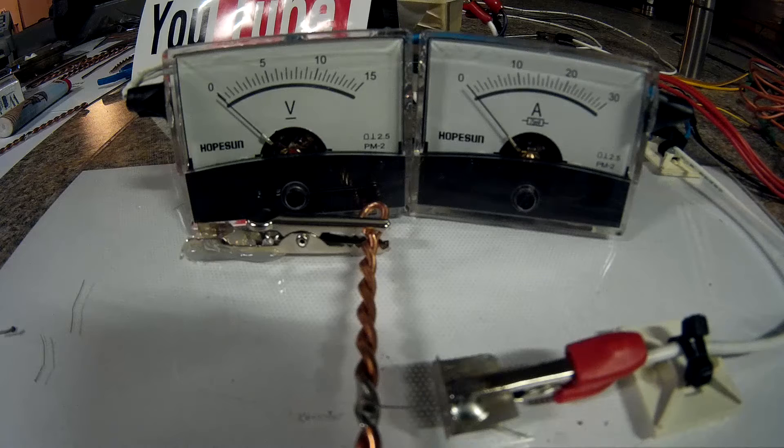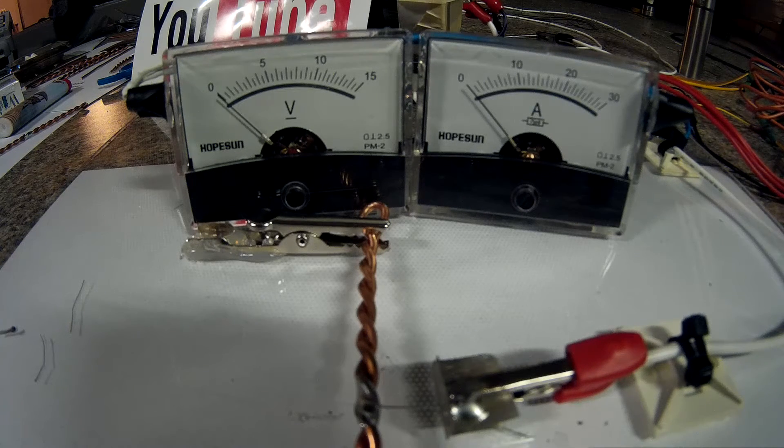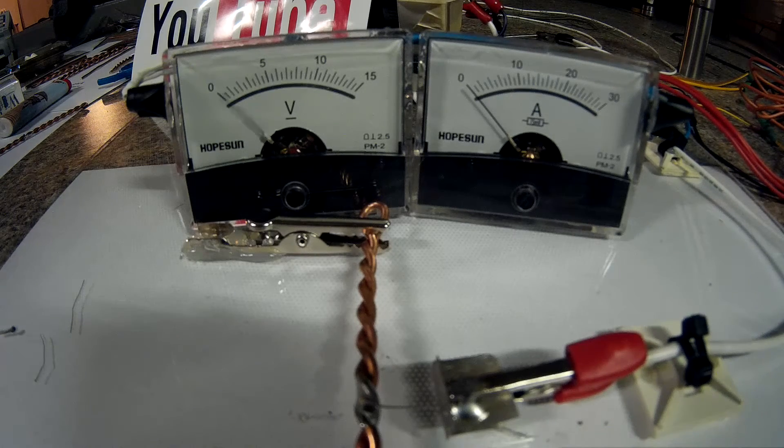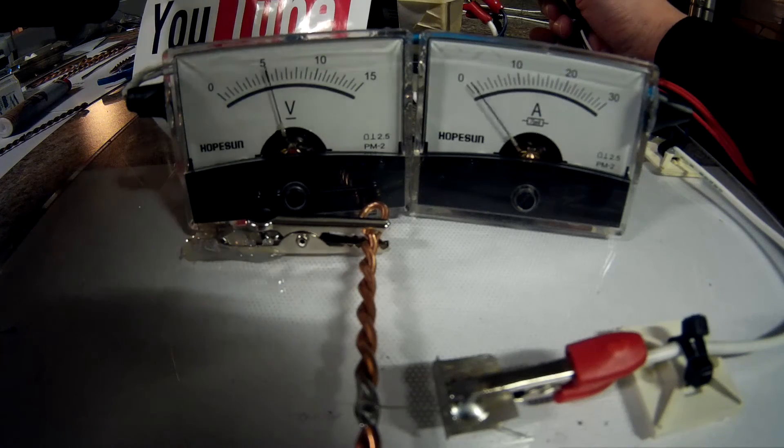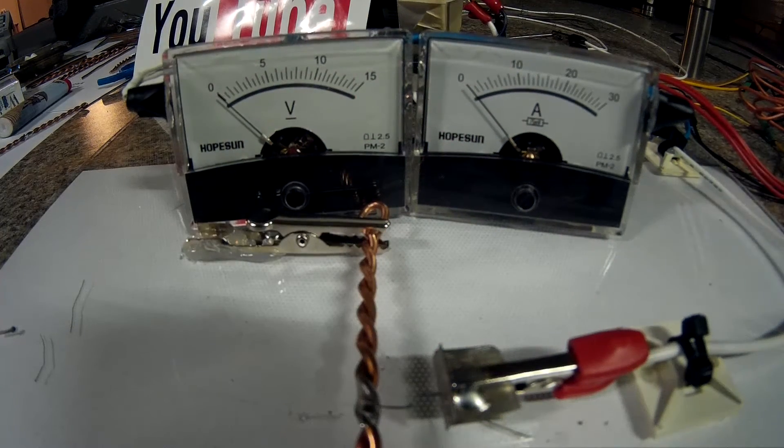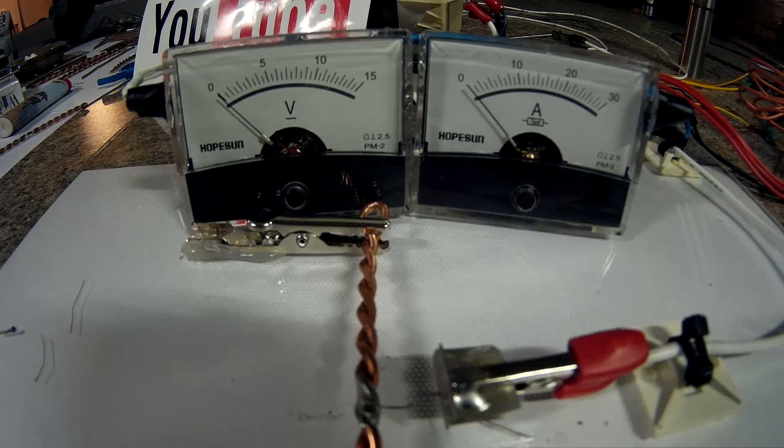Okay, that previous wire was the 14 gauge. This next one is the 12 gauge and the gap is set at 9.93 millimeters. Contact. Okay, that just got up to 10 amps and then popped.